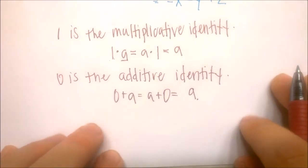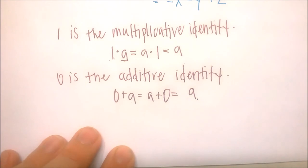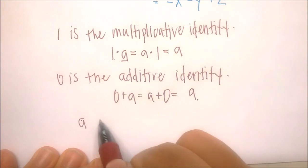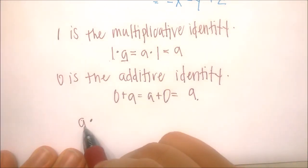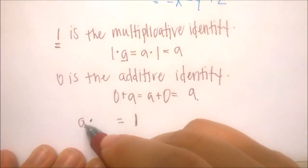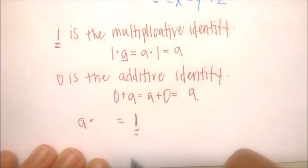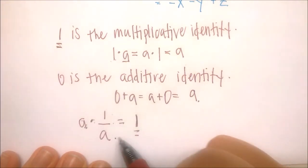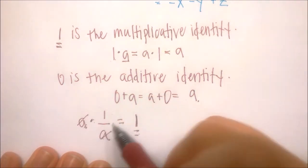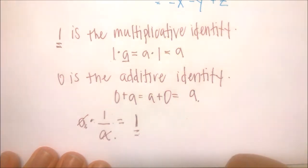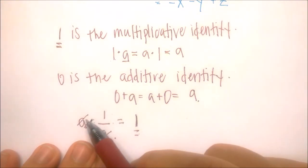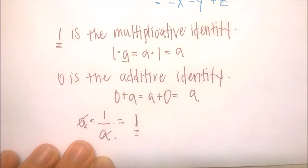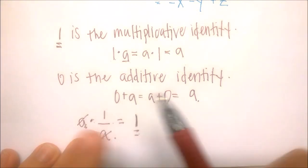This leads us to the concept of an inverse. The multiplicative inverse of a is whatever we can multiply a by to get back the multiplicative identity, which is 1. That value is 1 over a, because a times 1/a equals 1 — the a's cancel, and a/a is 1. This will lead us into the properties of fractions in the next video, where we'll discuss how to undo multiplication or division with the other operation.